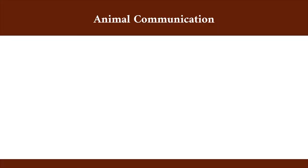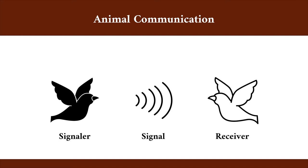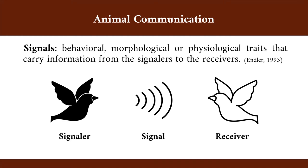First of all, let's talk about animal communication. Animals communicate by using signals, which are traits that carry information from signaller to receiver. The receiver then processes this information and produces a response to it. This is a base model that applies to all signaling systems.